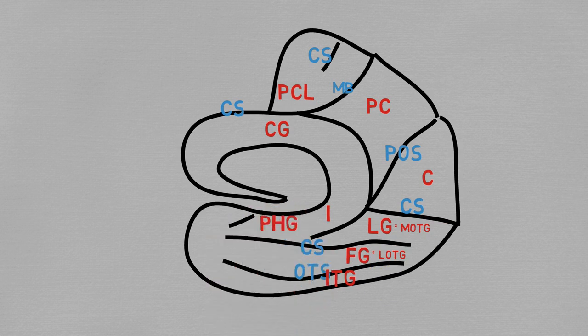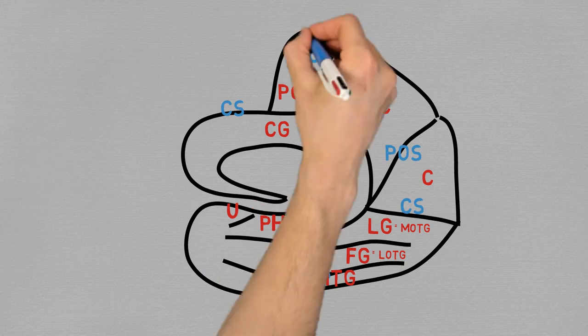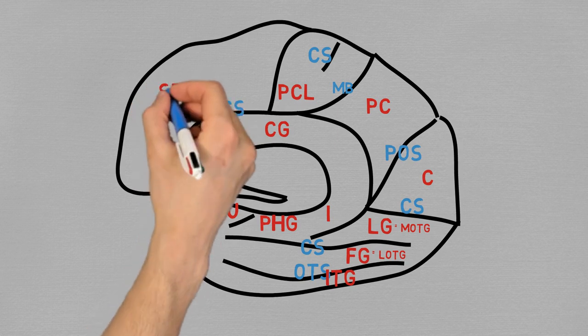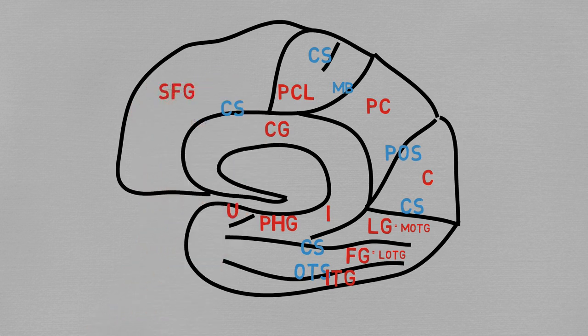There's also a little protrusion here, called the uncus, because of its shape like a hook. And finally, we add the anterosuperior margin, and this area corresponds to the superior frontal gyrus, which also appears on the lateral surface. Alright, let's go to the lateral surface then.